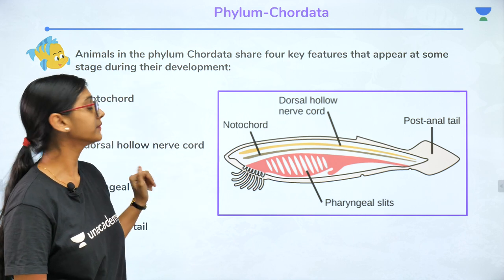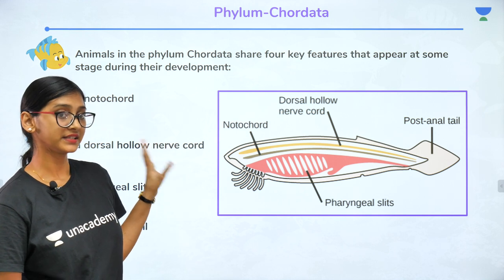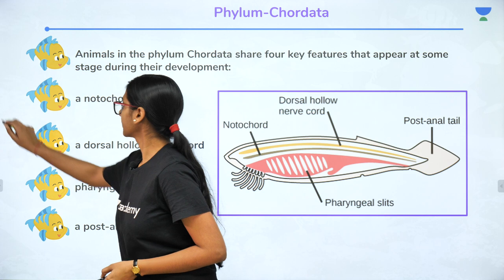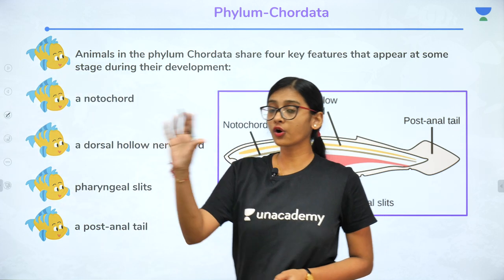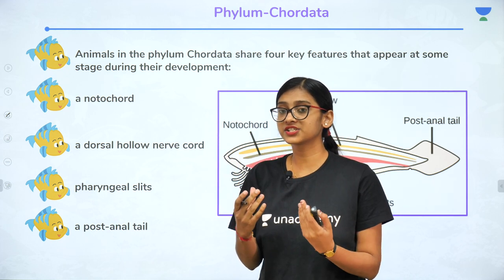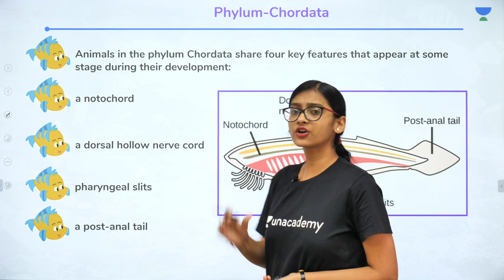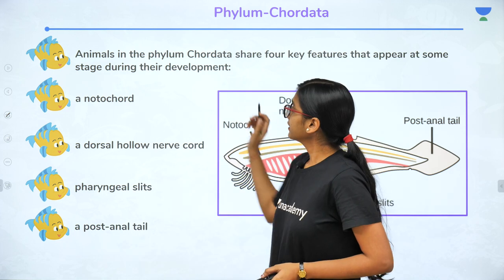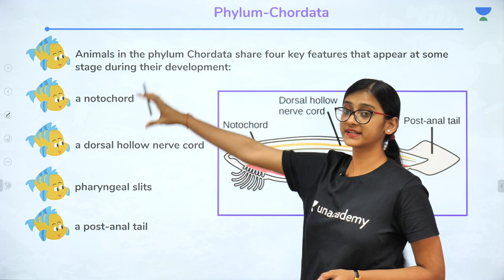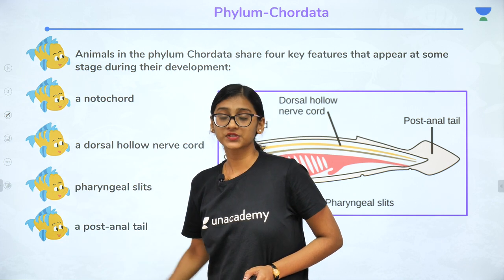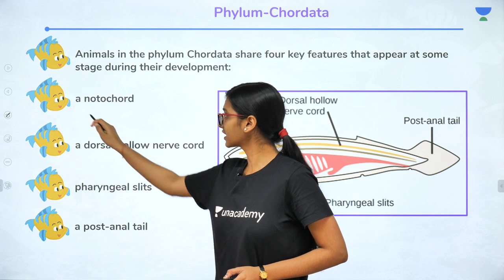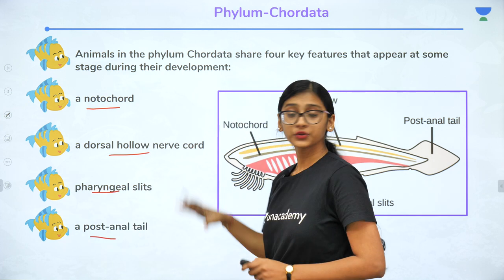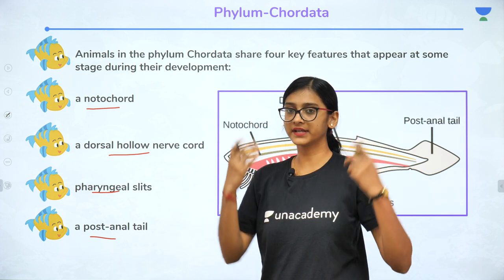Starting from phylum Chordata — the name 'Chordata' comes from the notochord they possess. Notochord is a hard, rod-shaped structure important for support. Animals belonging to phylum Chordata have four important key features: notochord, dorsal hollow nerve cord, pharyngeal slits, and post-anal tail.